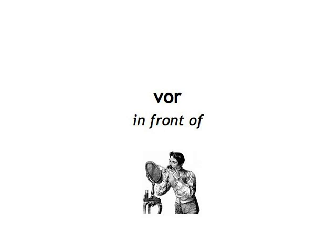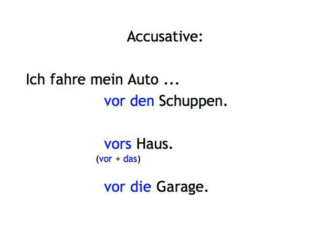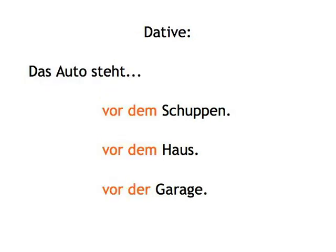Vor, meaning in front of. In the accusative, showing movement. Ich fahre mein Auto vor den Schuppen — I drive my car in front of the shed. Ich fahre mein Auto vors Haus — I drive my car in front of the house. Ich fahre mein Auto vor die Garage — I drive my car in front of the garage. In the dative, to show location. Das Auto steht vor dem Schuppen — the car is in front of the shed. Das Auto steht vor dem Haus — the car is in front of the house. Das Auto steht vor der Garage — the car is in front of the garage.